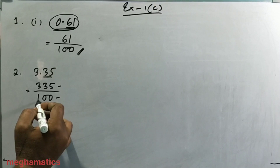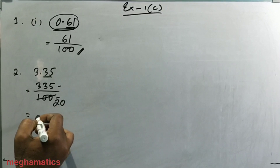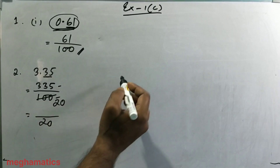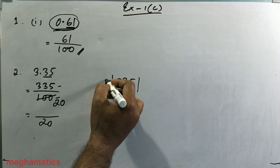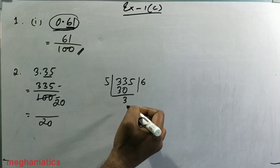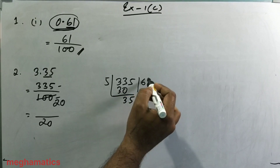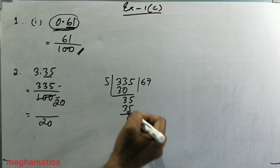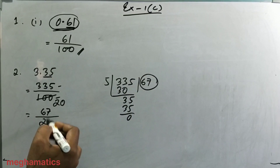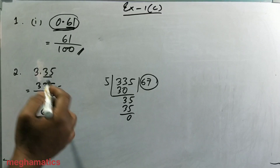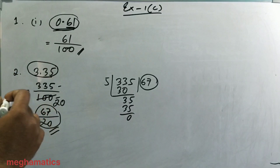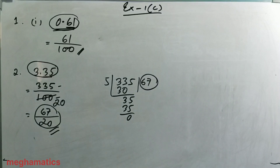Since both the numerator 335 and the denominator 100 are divisible by 5, we divide both by 5. 100 divided by 5 gives 20. 335 divided by 5: 5 sixes are 30, remainder 3; bring down 5 — 5 sevens are 35, remainder 0 — giving 67. So the fraction is 67 by 20. This decimal cannot be simplified further, so the answer is 67 by 20.